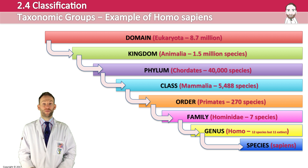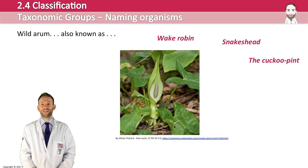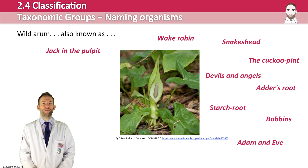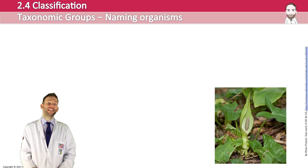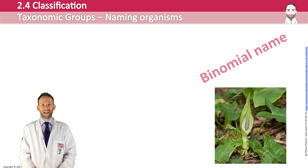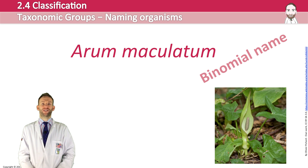Deciding what to name an organism is important. One plant is known by many common names: wild arum, wake robin, snakes head, cuckoo pint, devils and angels, adders root, lords and ladies, and many more. Obviously having so many different names is not ideal, so in science we use the binomial naming system — two names. You take the genus name and species name and put them together. This plant is called Arum maculatum. Rules: the genus name always has a capital letter, the species always has a lowercase letter, and names should always be italicised (or underlined when handwritten).